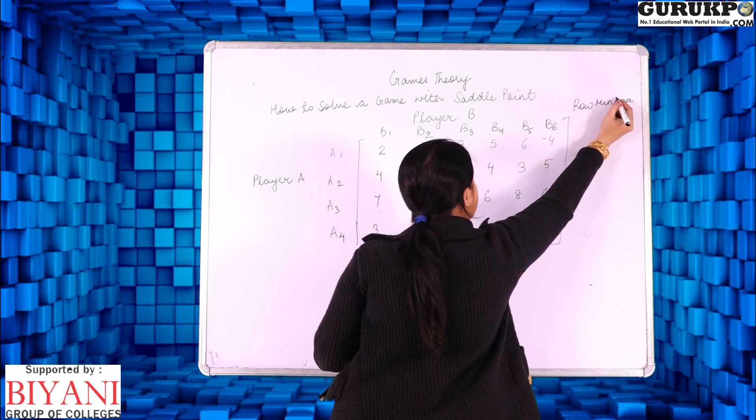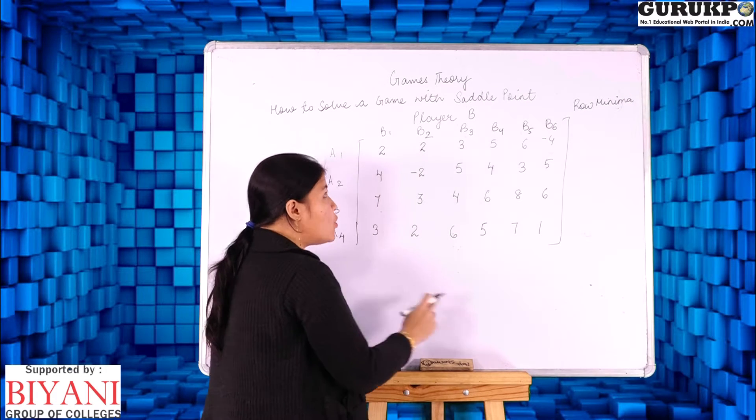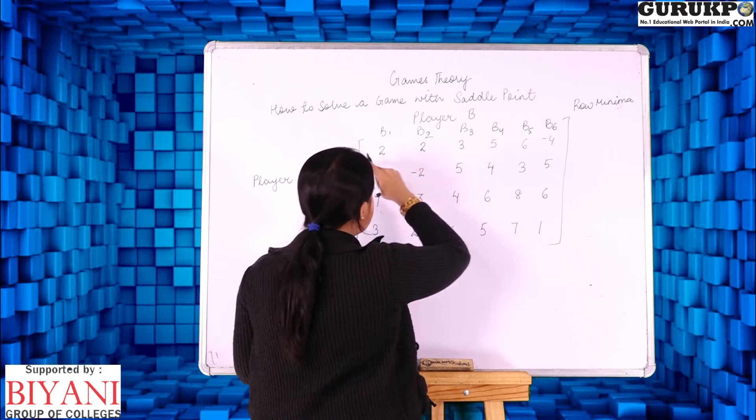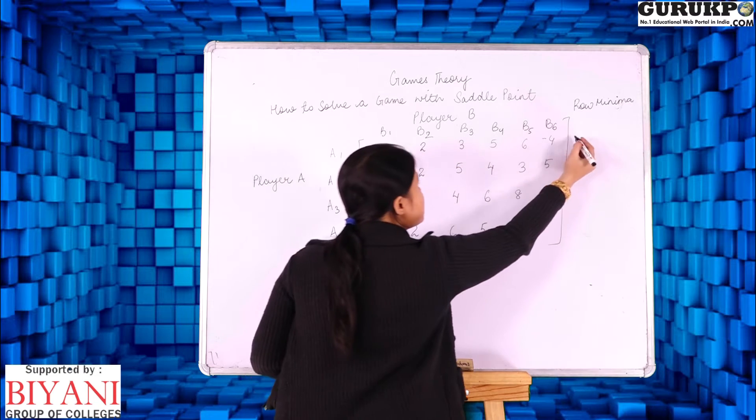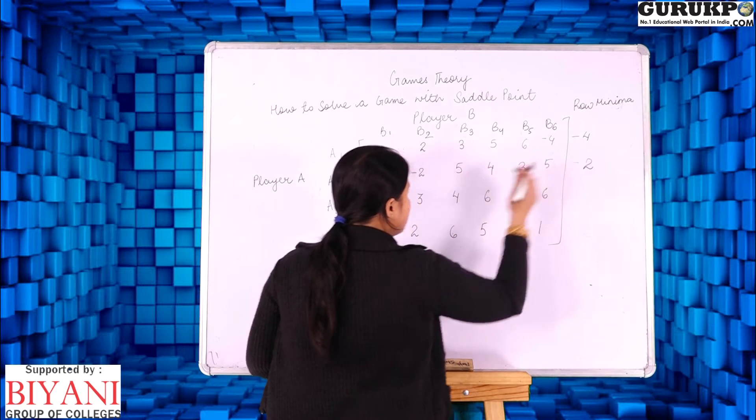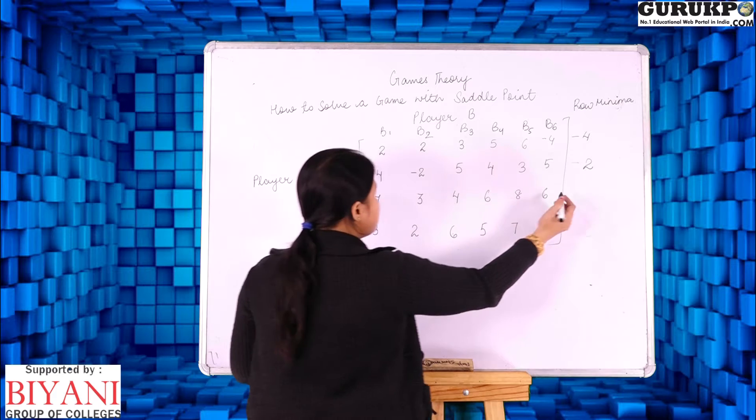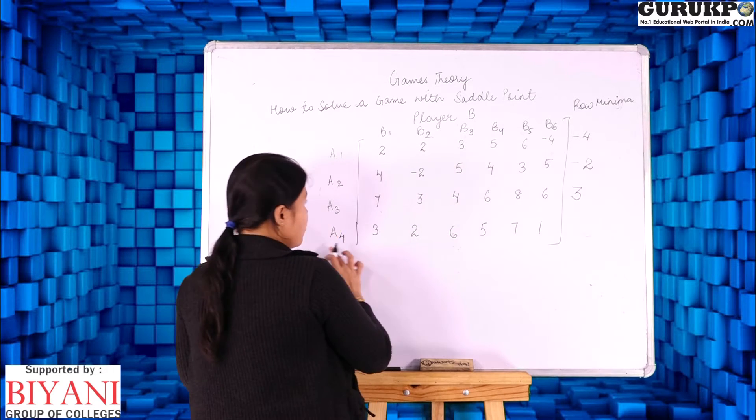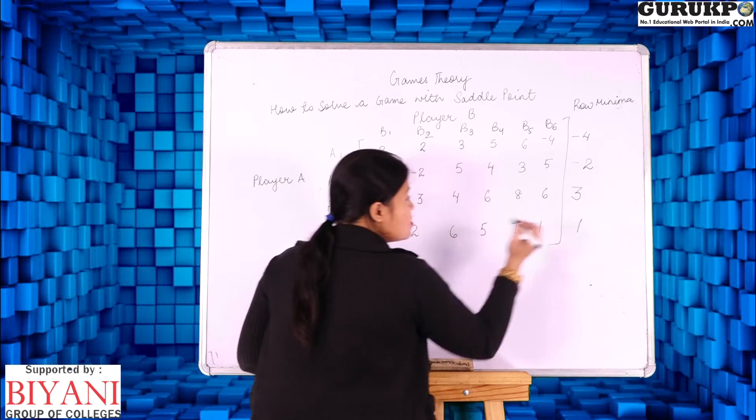It means we have to find out the minimum entry of each row. Now here from A1 strategy the minimum entry is minus 4. From A2 the minimum entry is minus 2. From A3 the minimum entry is 3 and from A4 the minimum entry is 1.